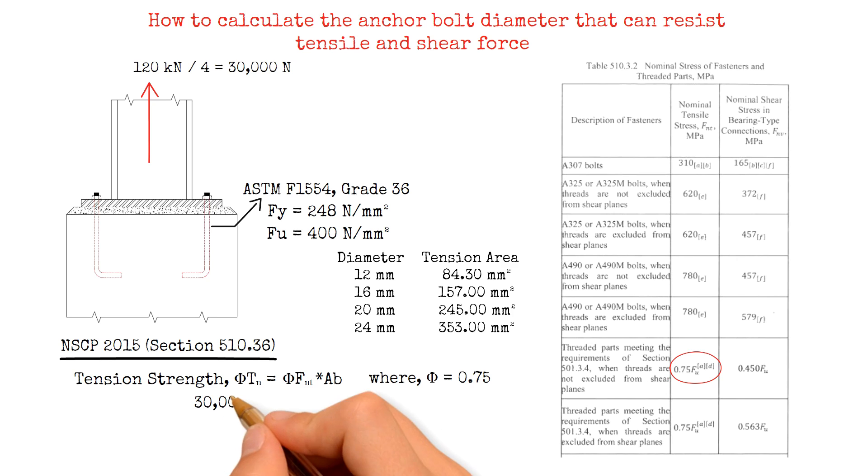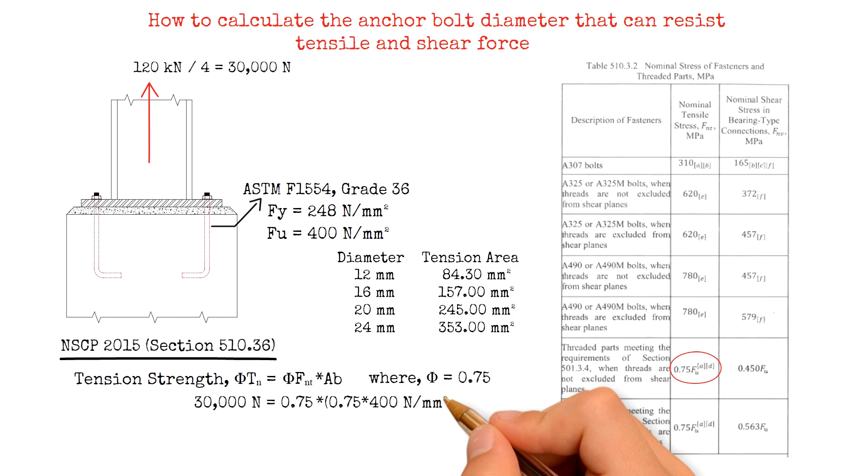30,000 N equals 0.75 reduction factor multiplied by the nominal tensile stress, 0.75 of the ultimate strength 400 N/mm², then multiplied by the tensile area. Solving for the tensile area, we have 133.33 mm².